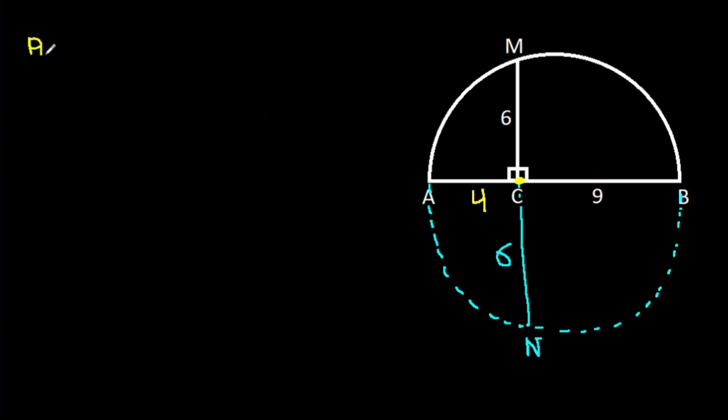And AB is diameter. So radius will be AB over 2, and AB is 4 plus 9 over 2, that will be 13 over 2.